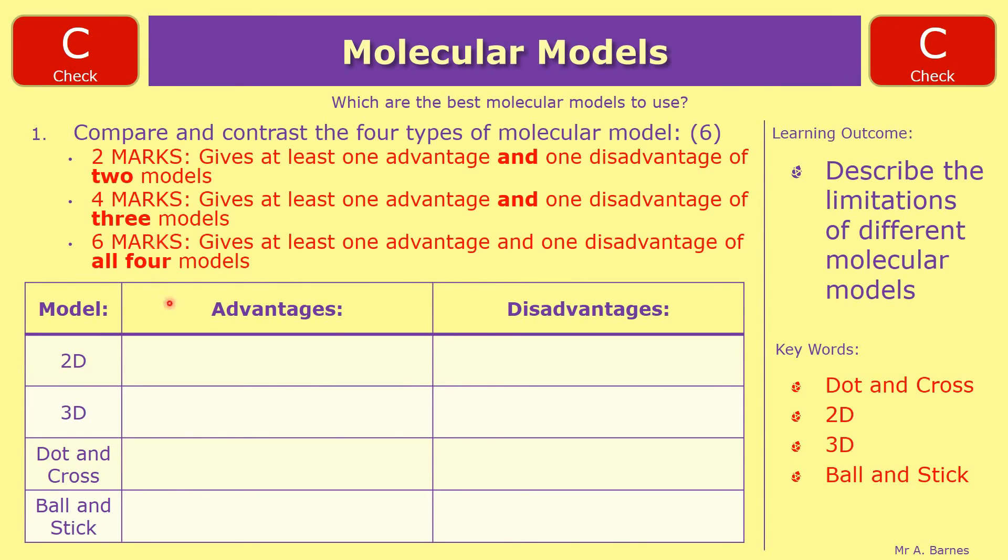Your 2D model: you could have either gone with simple or they show the atoms in the compounds and how they're connected for your advantage. And for your disadvantage, they don't show the shape and they don't show the size. So one of either of those and that would have got you the first bit.